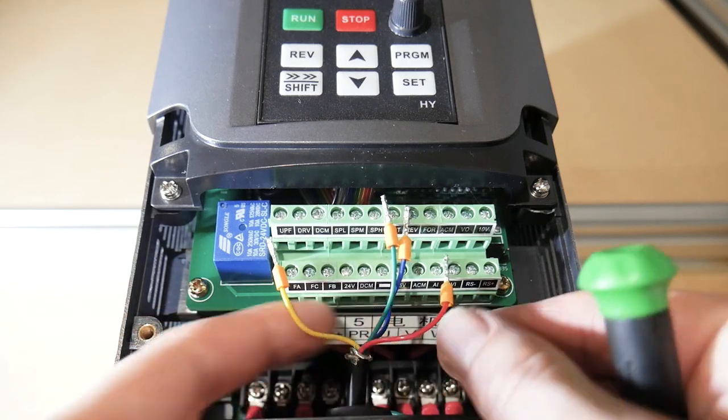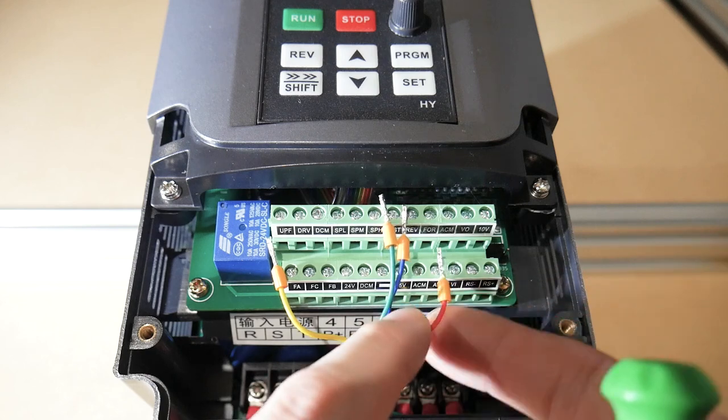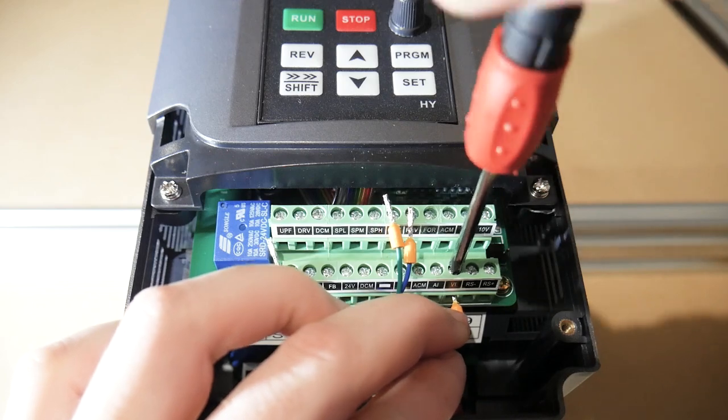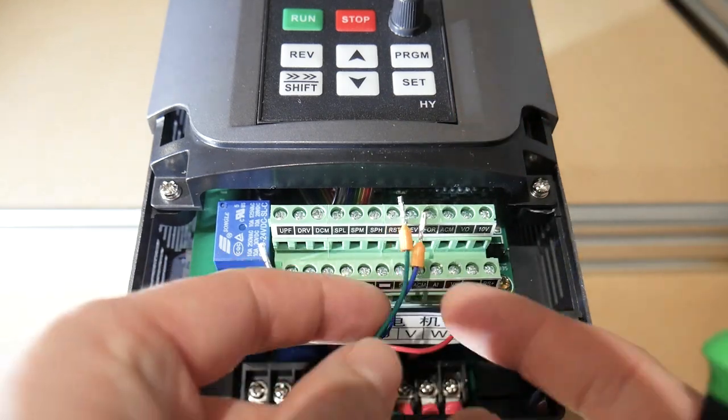Here I'm connecting the wires to have the VFD controlled by the NVUM controller. We need the DCM, ACM, FOR, and VI pins connected.